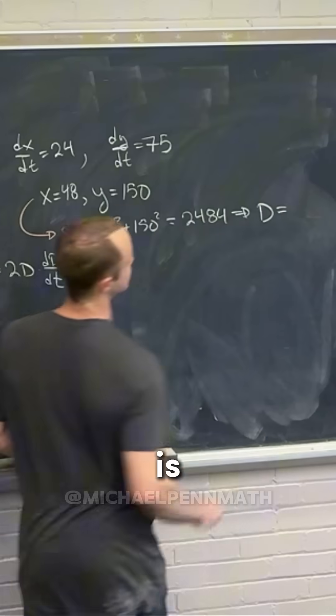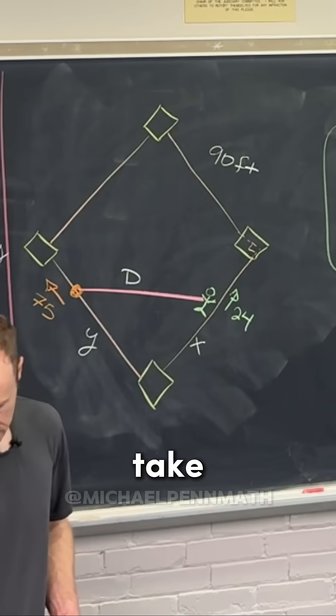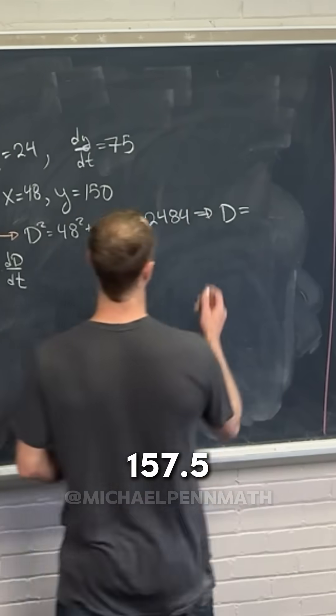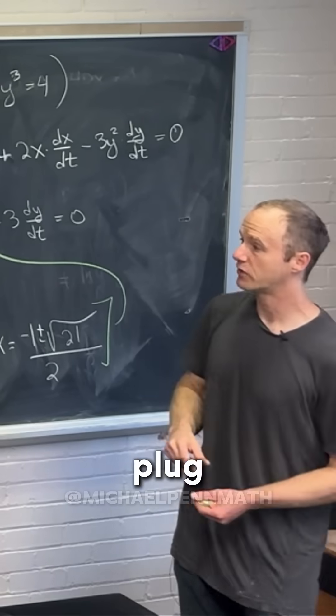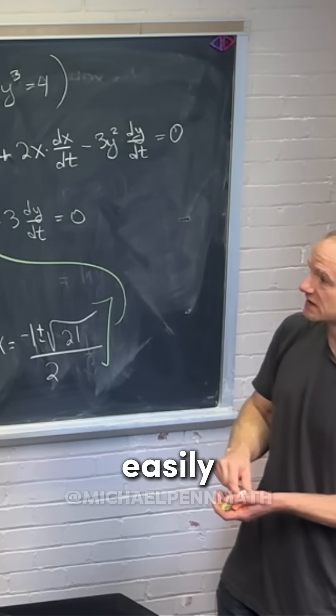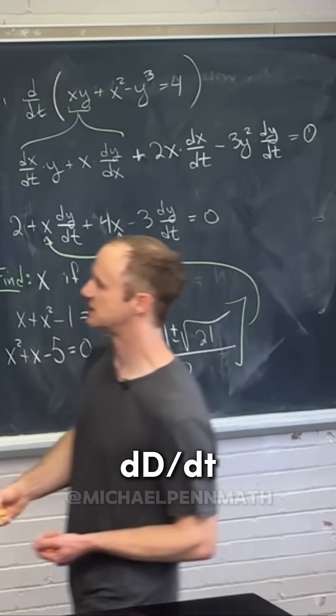That means d is equal to, if we take the square root of this, about 157 and a half. Now we can plug in all these parts and pretty easily solve for dD/dt.